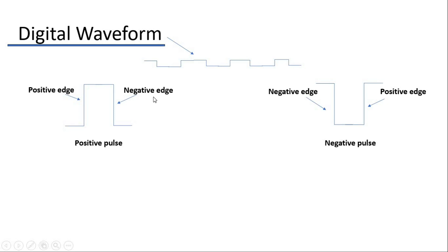A pulse has two edges: a positive edge and a negative edge. A positive edge is produced when voltage changes from low level to high level. As you can see, the left side of the positive pulse has a positive edge, while the right side of the negative pulse also has a positive edge. A negative edge is produced when voltage changes from high level to low level.